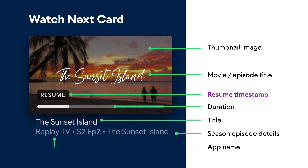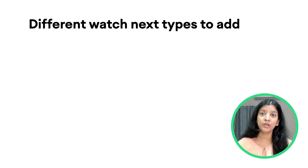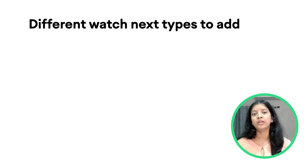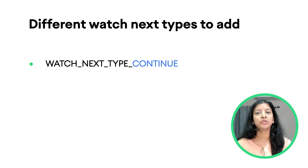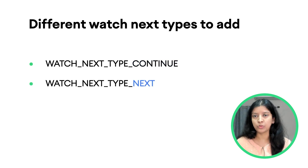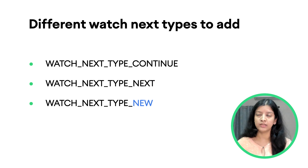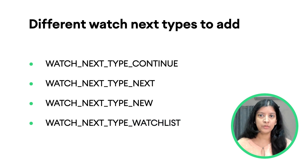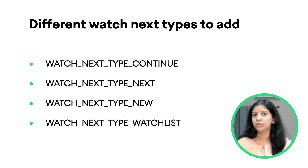Now, let's see what types of Watch Next cards you can add. There are four different types of Watch Next cards depending on the user journey and which call to actions it displays. To quickly summarize: type continue is for unfinished content, next is for next episode, new is for a new season, and type watch list is for bookmarking content which you might want to watch later on. All these types and use cases are covered in detail in the introductory talk. Do check that out.